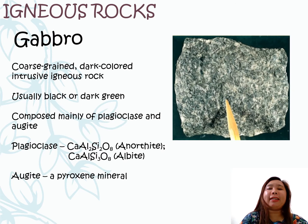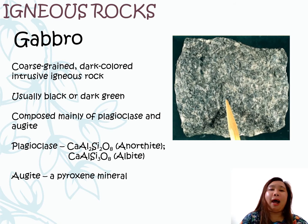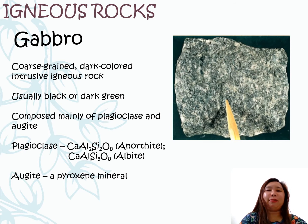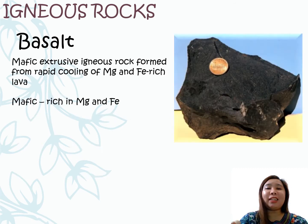Gabbro is another example of igneous rock. It is a coarse-grained, dark-colored, intrusive igneous rock. It is usually black or dark green in color and composed mainly of plagioclase and augite. Plagioclase could be an anorthite or an albite. Augite is a kind of pyroxene mineral.